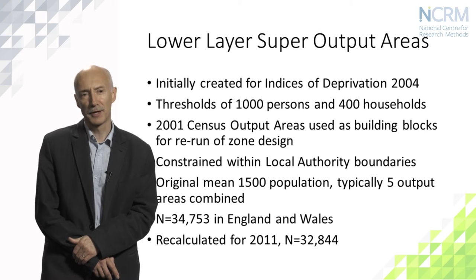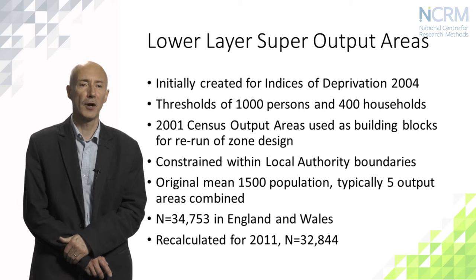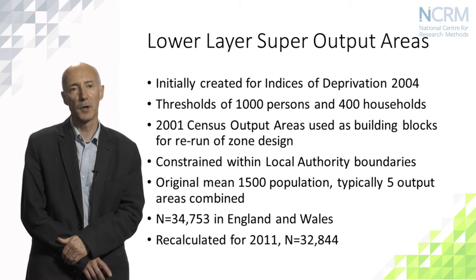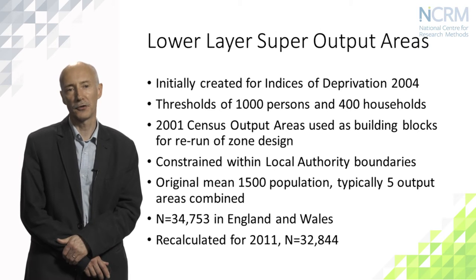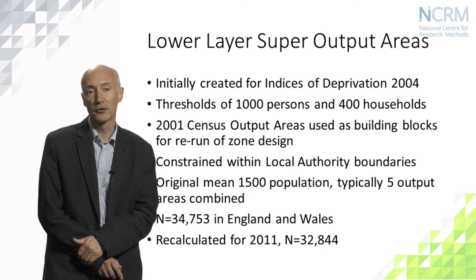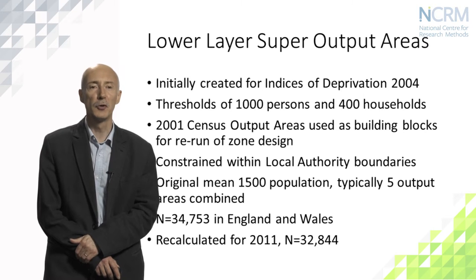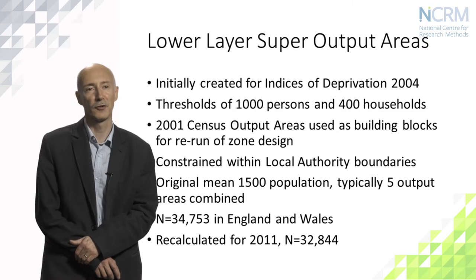Typically the original populations had a mean of around 1,500, so they would often comprise five output areas combined. There were 34,753 lower layer super output areas in England and Wales in 2001, and that's gone down slightly to 32,844 in 2011. Users of the statistics may note there is also a zone called a middle layer super output area — that's an aggregation of the lower layers — but it was not produced through a direct automated process. It was much more a process of consultation which led to the creation of those zones.